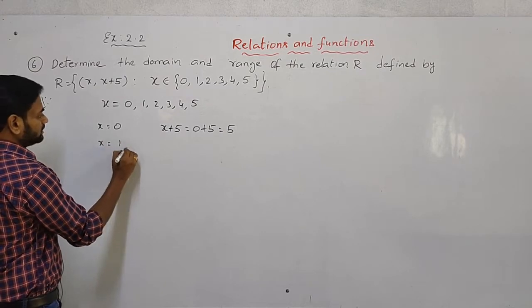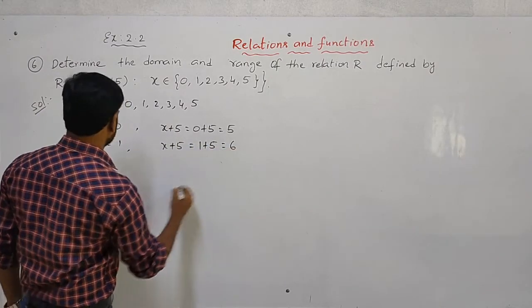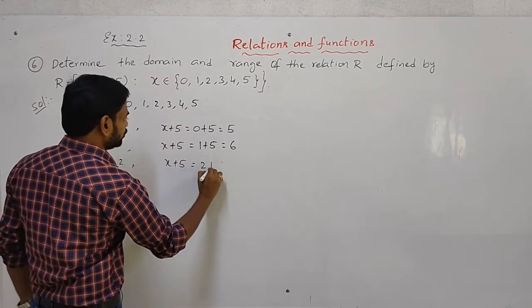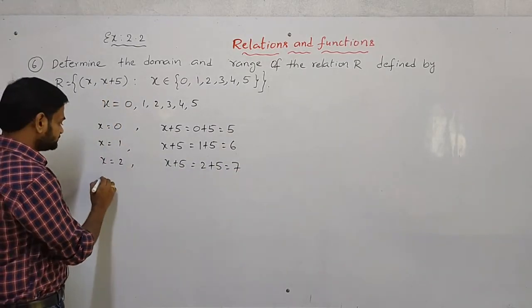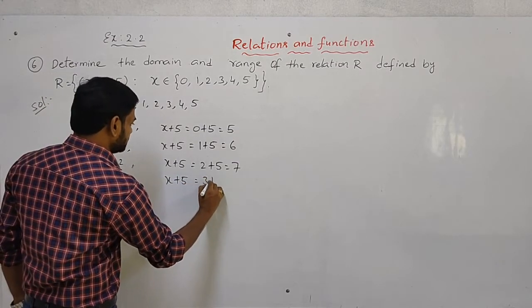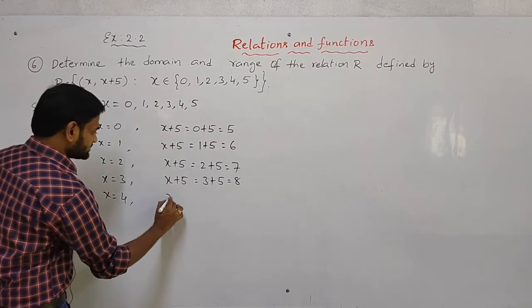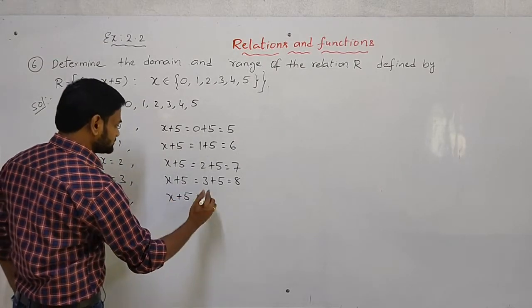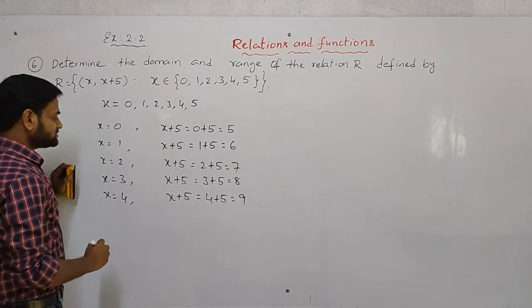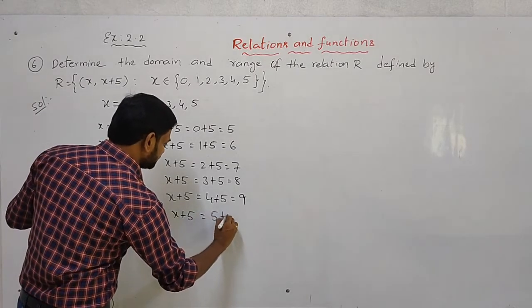Continuing: when x = 2, x + 5 = 7. When x = 3, x + 5 = 8. When x = 4, x + 5 = 4 + 5 = 9. And finally when x = 5, x + 5 = 5 + 5 = 10.